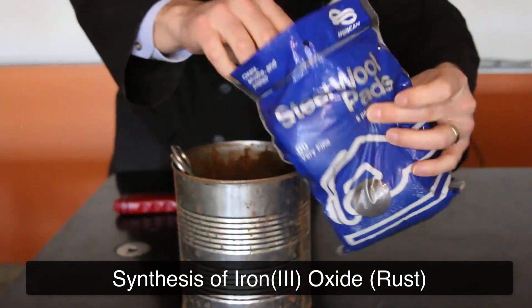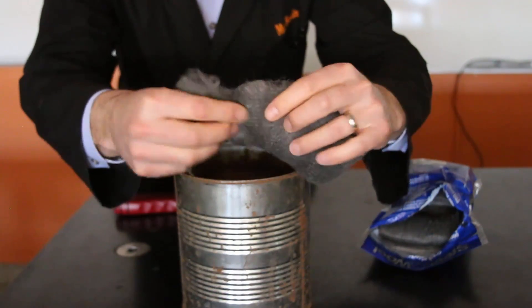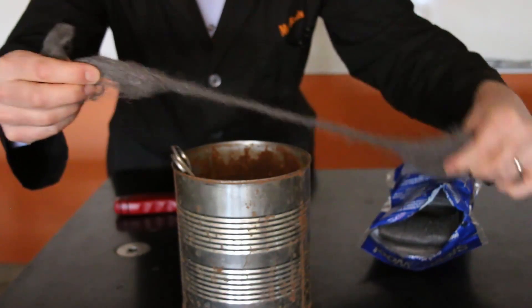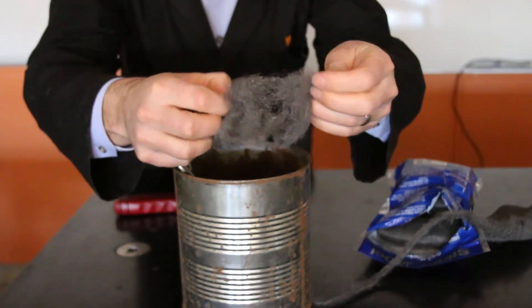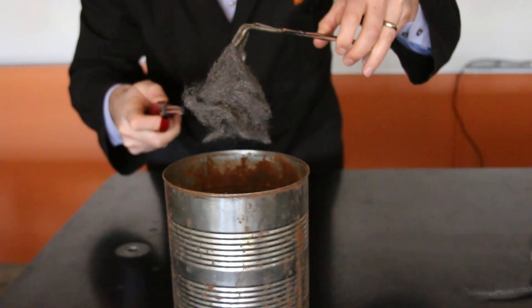So we can make iron oxide very quickly by getting steel or iron to rust. But rusting typically takes a long time. So if we take some steel wool, the main component in that is iron, and spread it out so that oxygen can get in between there.